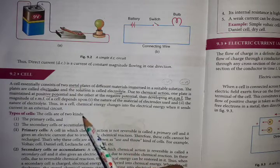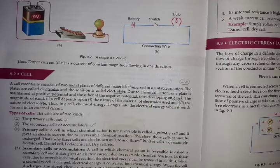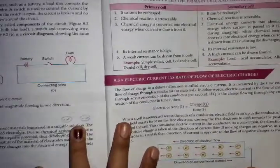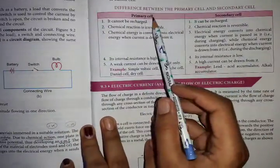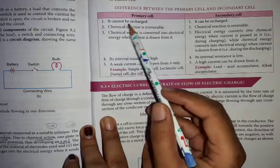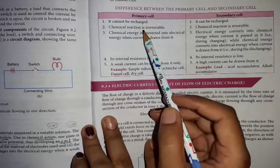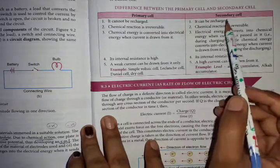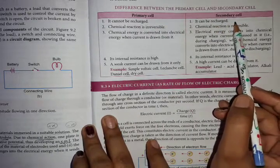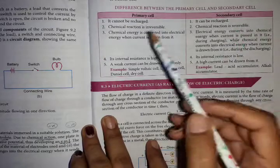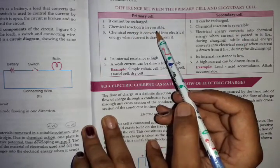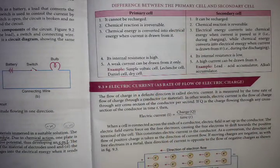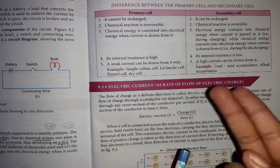There are two types of cells: primary and secondary. A primary cell cannot be recharged — like a cell we use once and discard. A secondary cell can be recharged — like a phone battery that we can charge again. In a primary cell, once the cell is dead you can't get it back.